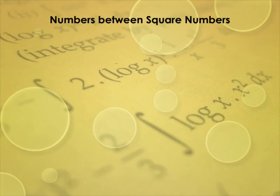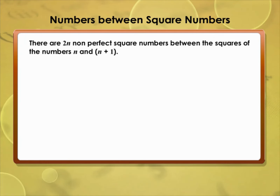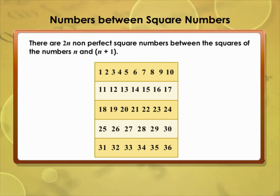Numbers between square numbers: in general, there are 2n non-perfect square numbers between the squares of n and n+1. For example, between 1 and 4 we have 2 non-square numbers (2, 3); between 4 and 9 we have 4 non-square numbers (5, 6, 7, 8); between 9 and 16 there are 6; between 16 and 25 there are 8; and between 25 and 36 there are 10 non-square numbers.